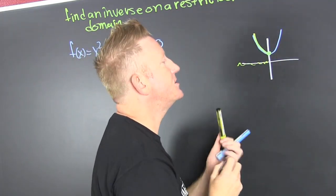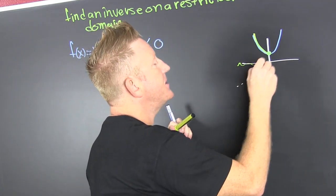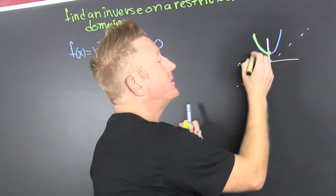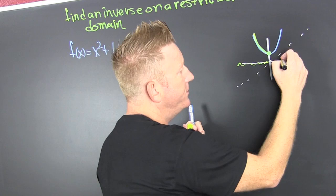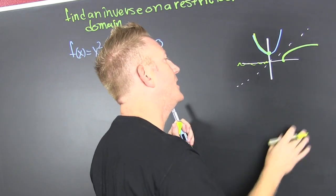Now if you consider this yellow graph, then it does pass the horizontal line test because we're ignoring the other piece. So if you were gonna go and reflect it across the line y is equal to x, then that's the graph of the inverse.